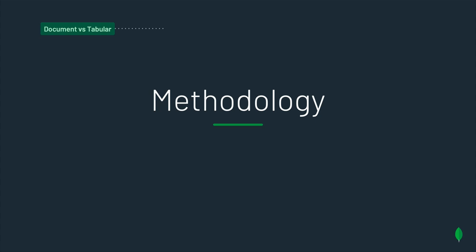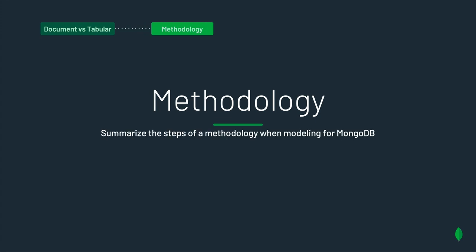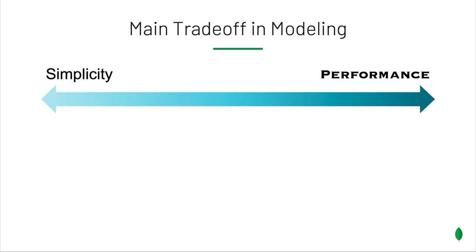That brings us to the second section of our talk: the methodology. But before we look at the different phases, let's look at something really important — the main trade-off when you model, not just for databases but for a lot of things: you usually have to choose between simplicity and performance.